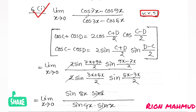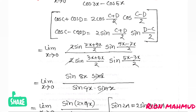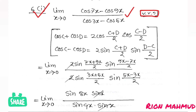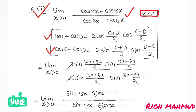The first question: limit x tends to 0 of (cos7x minus cos9x) divided by (cos3x minus cos5x). We will solve this using the cos C plus cos D and cos C minus cos D identities. The formula: cos C plus cos D equals 2 cos((C+D)/2) cos((C-D)/2).